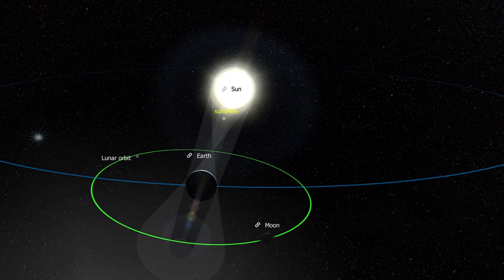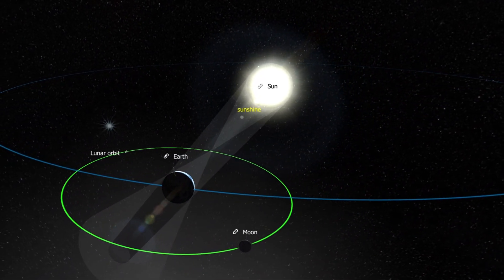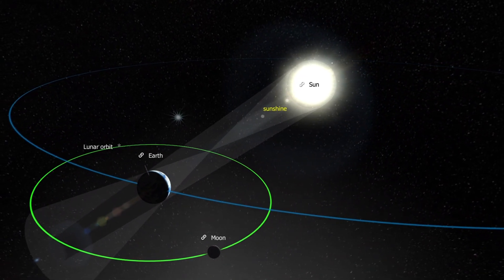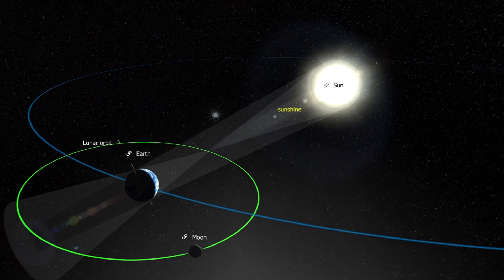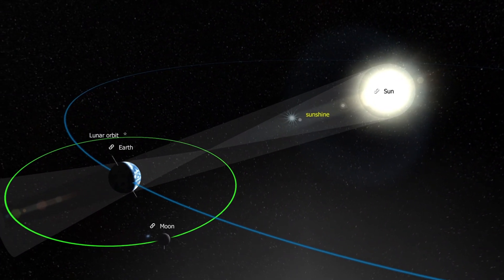The Moon completes one orbit in 27.3 days. It takes the same amount of time to complete one orbit as it does to rotate on its axis. Therefore, we always see the same side of the Moon. This is called synchronous rotation.